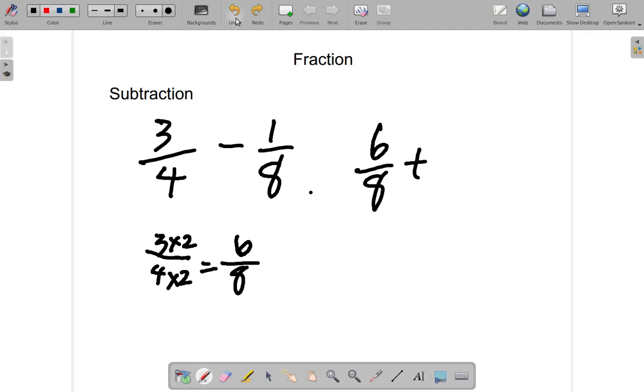Let me do that again. Minus 1 eighth. 6 eighths minus 1 eighth gives 5 eighths.